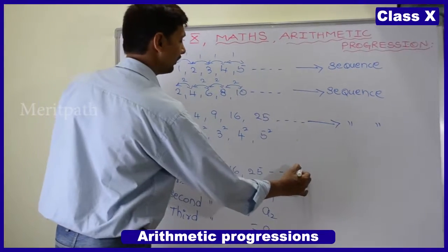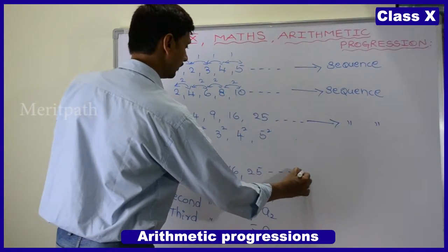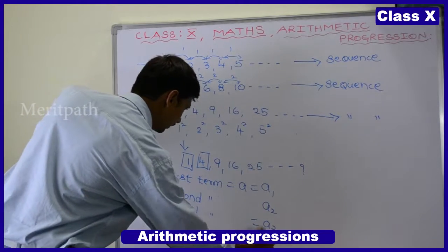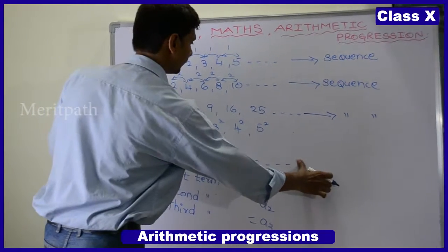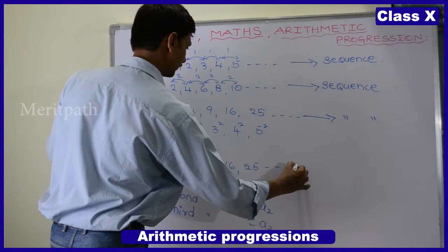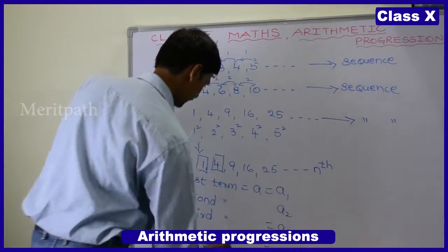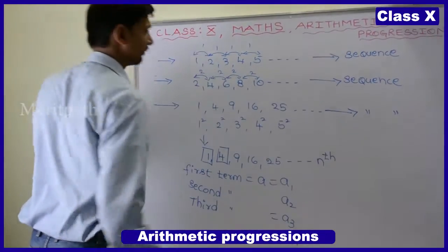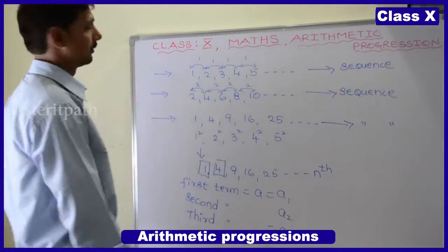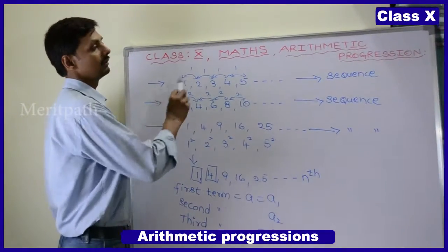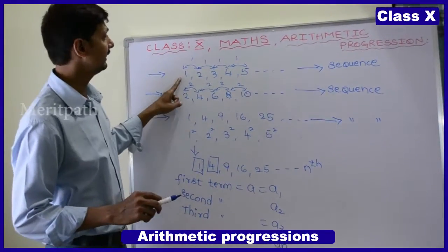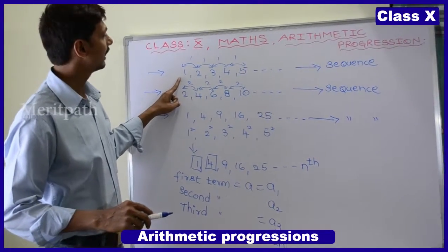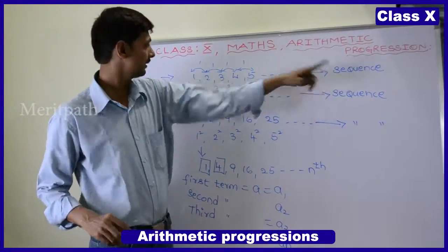And finally, whatever term we get at the last position is called the last term. Suppose it is the nth term, then we call it an. So to recall — these are the patterns, and in these patterns we observe some rules. That rule is called a sequence.